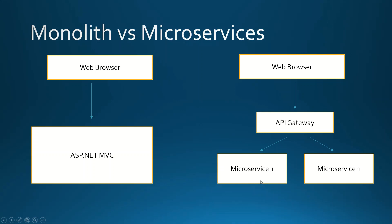So we split the domain into multiple smaller parts and each smaller part has a corresponding microservice. The request comes from the web browser and goes to the API gateway — there is a single point which receives requests from the user and then routes the request to the appropriate microservice.